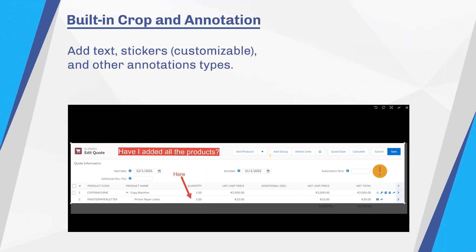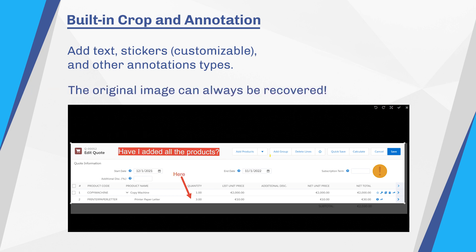Since a picture can sometimes include too much detail, or you need to bring attention to something specific on the image, you can use the built-in crop and annotation tools. Add text, stickers — which are customisable — and other kinds of annotations. And don't worry, SharingPix ensures the original image is never gone for good; it can always be recovered.